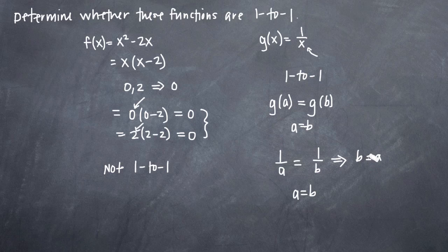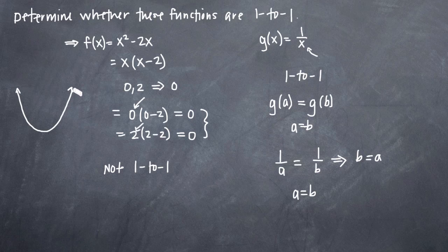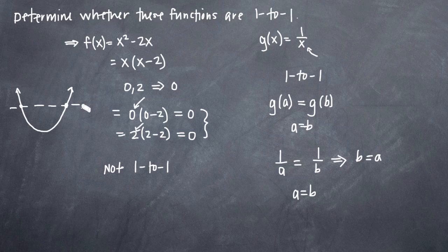You can also always use the graph of the function to determine whether or not it is one to one. This function f(x) has an x² term, so we know its graph will be a parabola. A parabola would not pass the horizontal line test because we can draw a horizontal line that crosses the graph at more than one place — it crosses at two places — so we know it wouldn't pass the horizontal line test and therefore wouldn't be one to one. That's a couple of ways to determine whether or not a function is one to one, or whether or not it passes the horizontal line test.